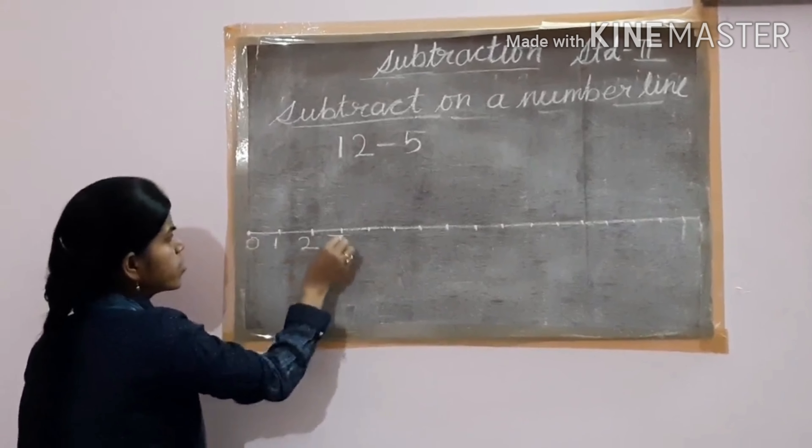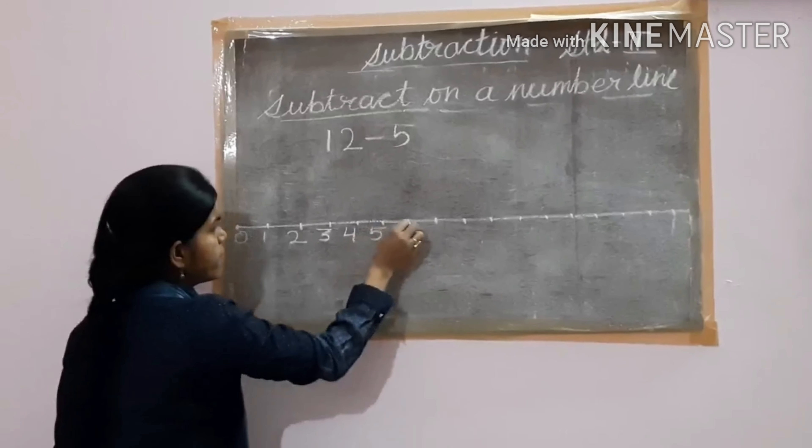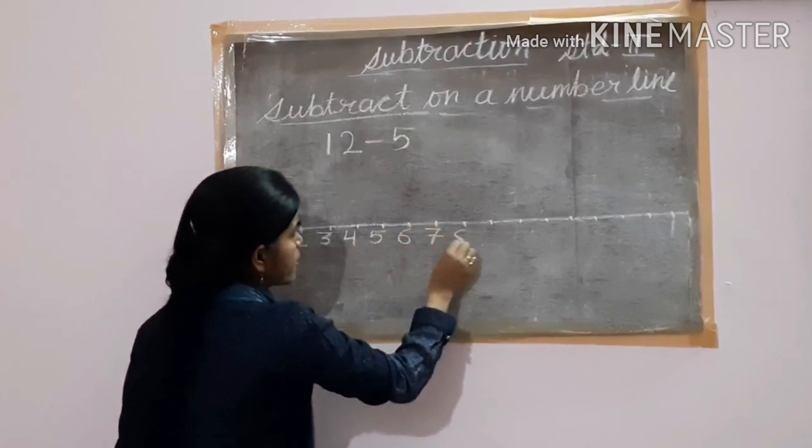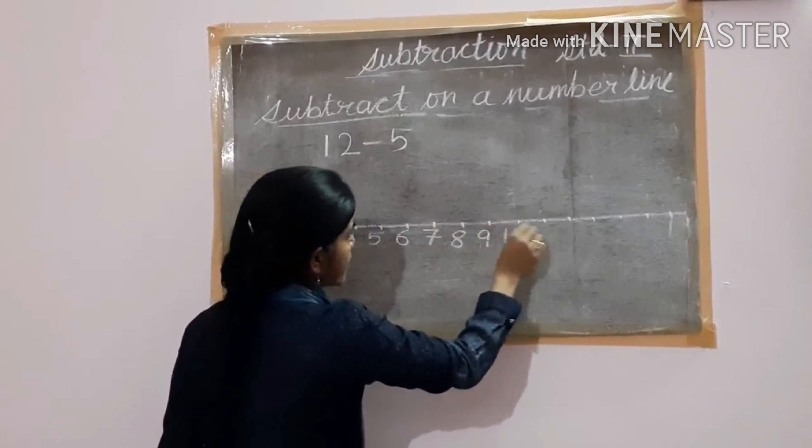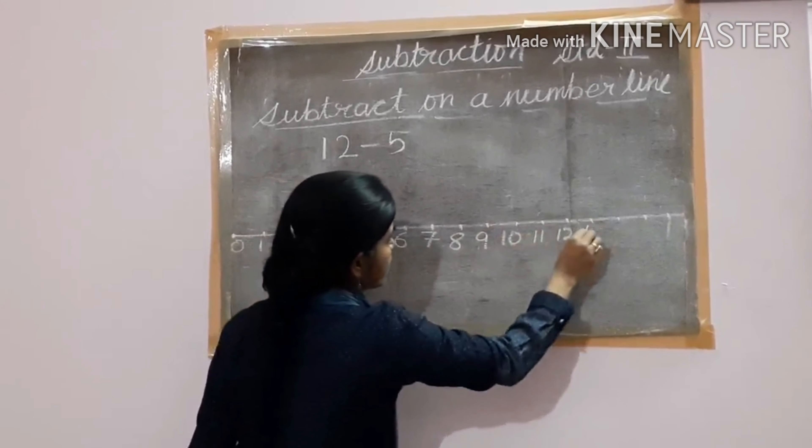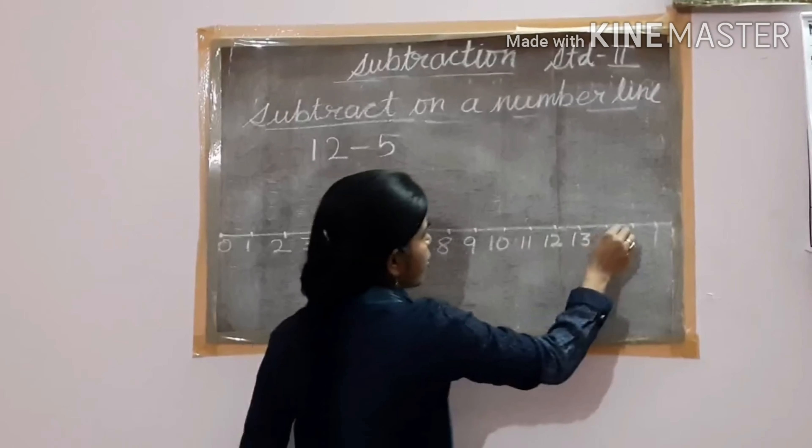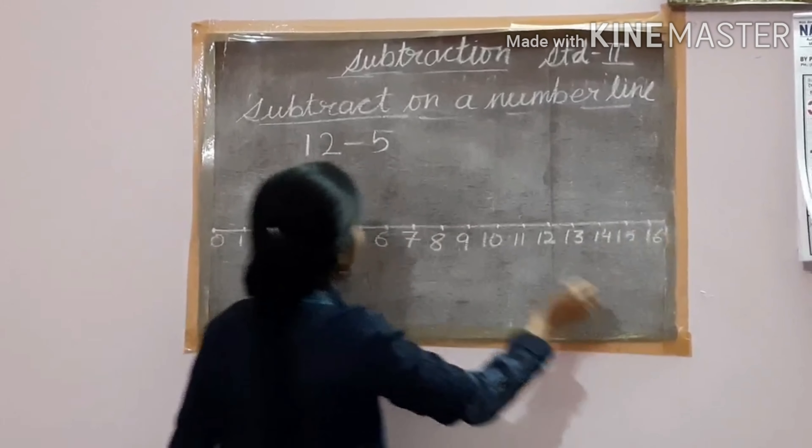And then we write the numbers: 0, 1, 2, 3, 4, 5, 6, 7, 8, 9, 10, 11, 12, 13, 14, 15, 16.